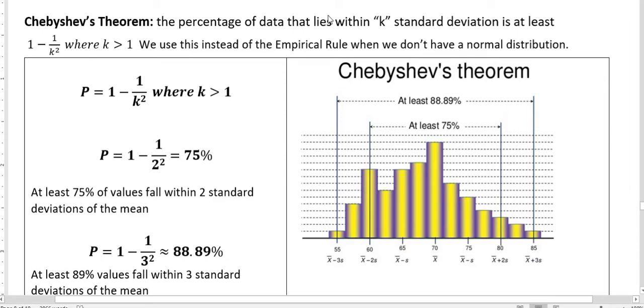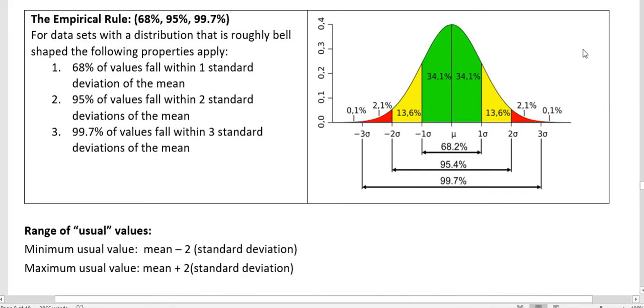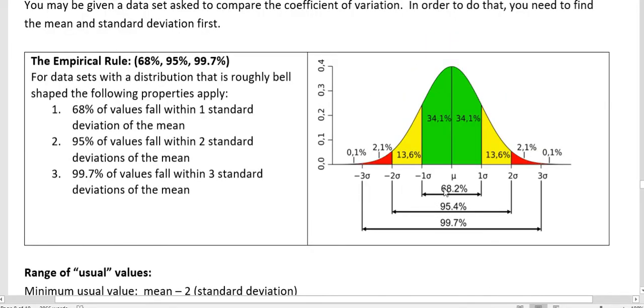We would use this instead of the empirical rule when we don't have a normal distribution. So for the empirical rule, things were normally distributed, but even then, we couldn't say exactly. I'll show you that again when you're talking about a standard deviation, we're saying 68.2% of the data falls within that. Well, that is an approximation. That's not exact.